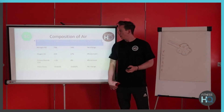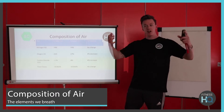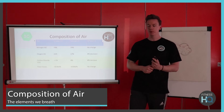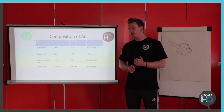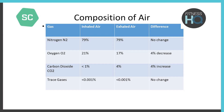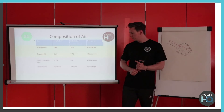Regarding the composition of air: the general atmosphere is made up of approximately 79% nitrogen and 21% oxygen when we breathe in, with very little carbon dioxide — less than 1% — and negligible trace gases. When we breathe out, nitrogen doesn't change as we don't use it. We exhale 17% oxygen, meaning we only actually use about 4% of the oxygen we take in. As a result, exhaled air contains 4% more carbon dioxide, while trace gases remain essentially unchanged.